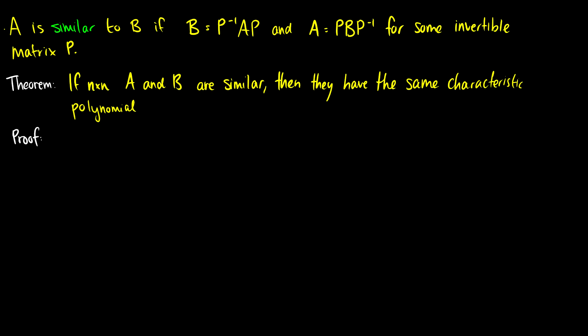Let's introduce something else. If we have two matrices A and B and they're similar, then they're going to have the same characteristic polynomials. A is similar to B if B equals P inverse AP and A equals PBP inverse for some invertible matrix P. This basically means we can do a transformation on a vector in B, do another transformation, and get back to A.